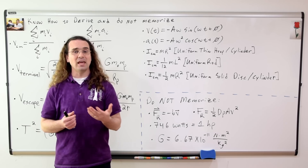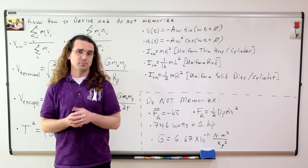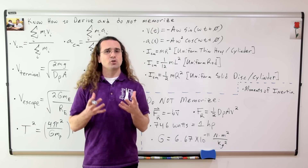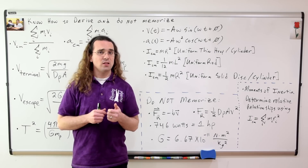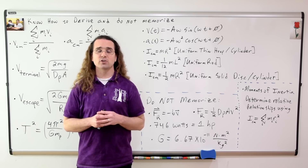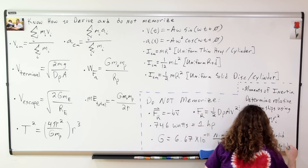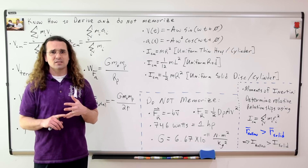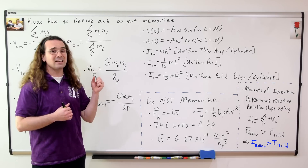A quick note about moments of inertia and the AP exam: if you need a specific equation for a moment of inertia to solve a problem, it will be provided for you. You do need to be able to compare relative moments of inertia based on the basic equation. For example, if we have a hollow sphere and a solid sphere of the same radius and same mass about their centers of mass, the hollow sphere will have a larger moment of inertia because more of its mass is concentrated farther from the axis of rotation. The average R value for a hollow sphere is greater than for a solid sphere, so its moment of inertia will be greater.